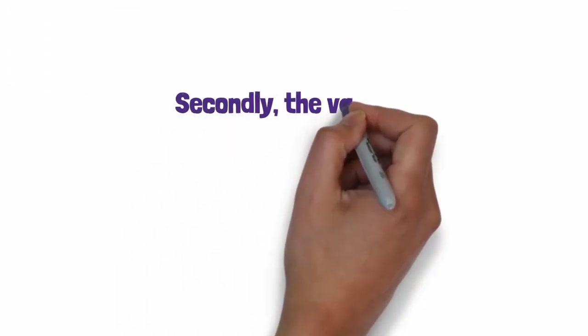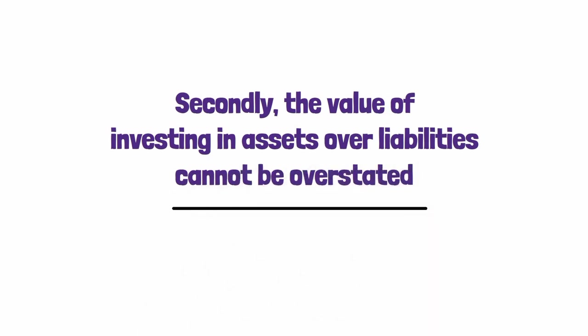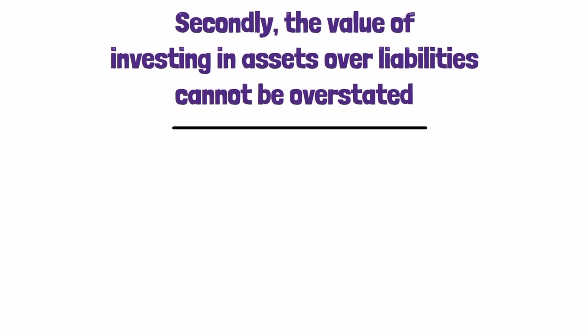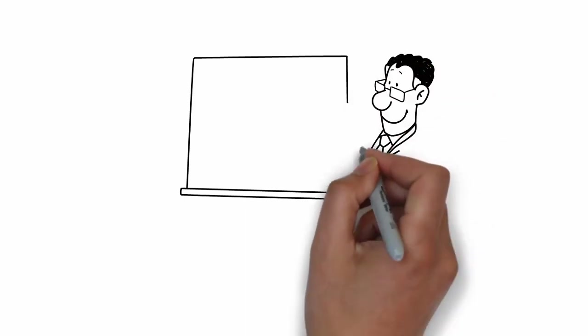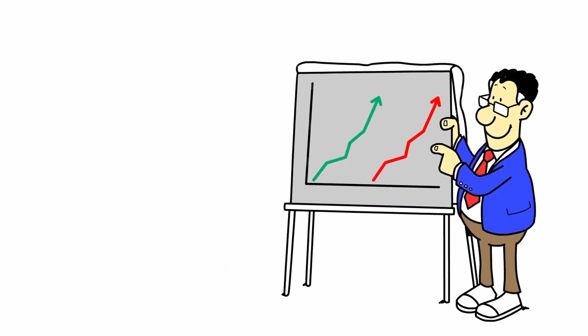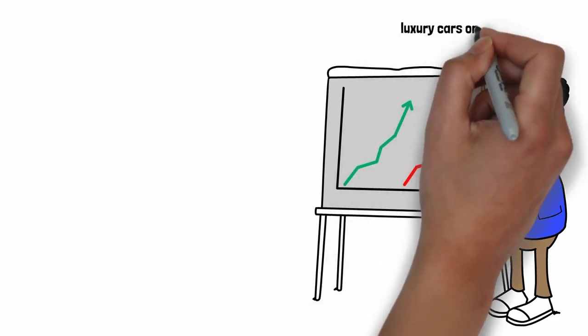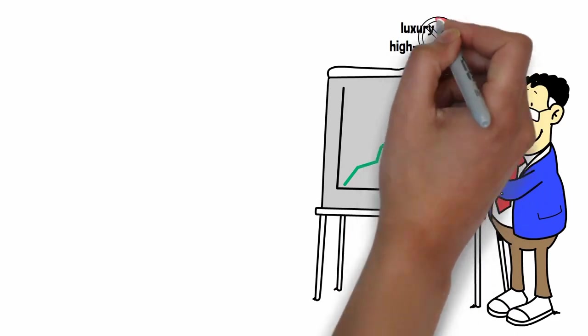Secondly, the value of investing in assets over liabilities cannot be overstated. Assets generate income or appreciate over time while liabilities drain your resources. Successful investors like Warren Buffett understand this principle and prioritize investments that will yield returns in the future. They avoid unnecessary liabilities that depreciate quickly, such as luxury cars or high-end gadgets.